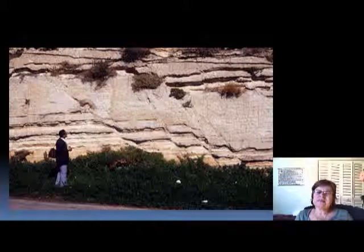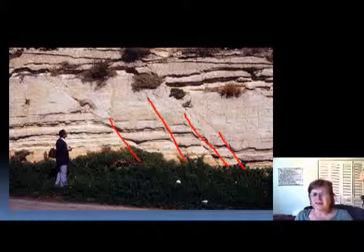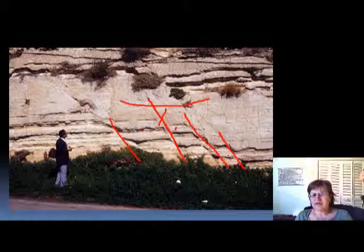As you can see, this is a series of regular normal faults — this here is the acute angle, so hanging wall, foot wall, hanging wall, foot wall — and the hanging walls all went down, so it's a typical normal fault series.